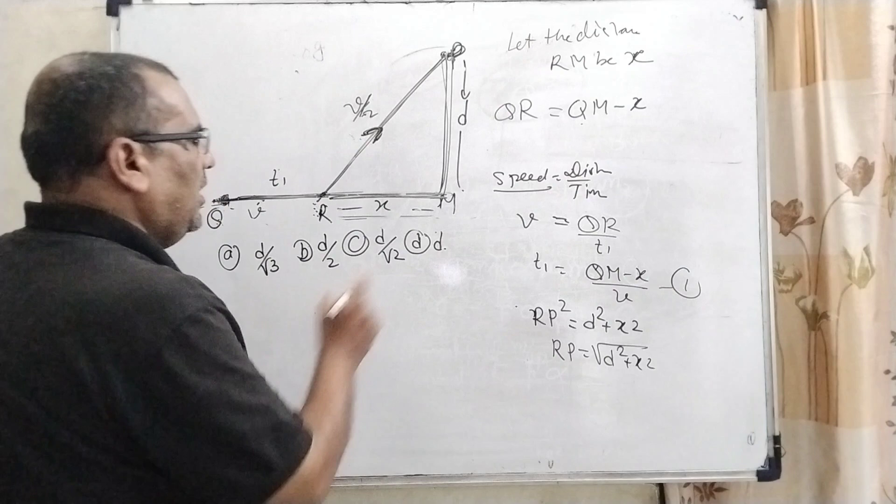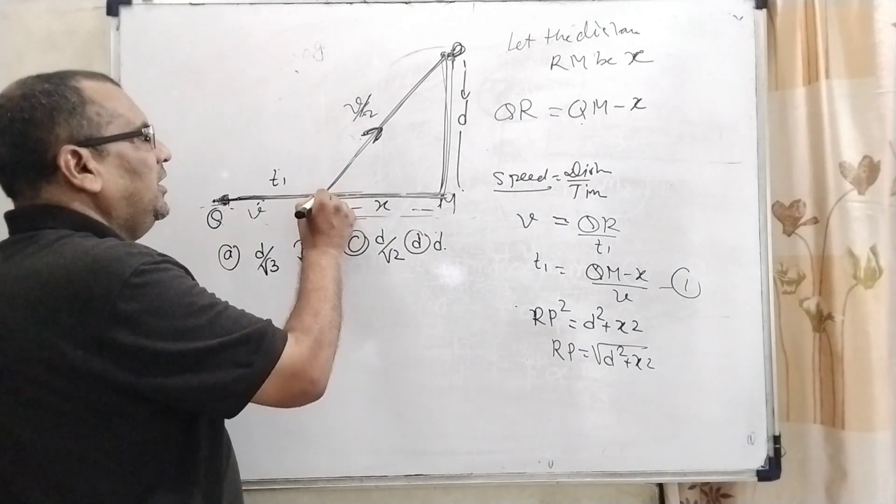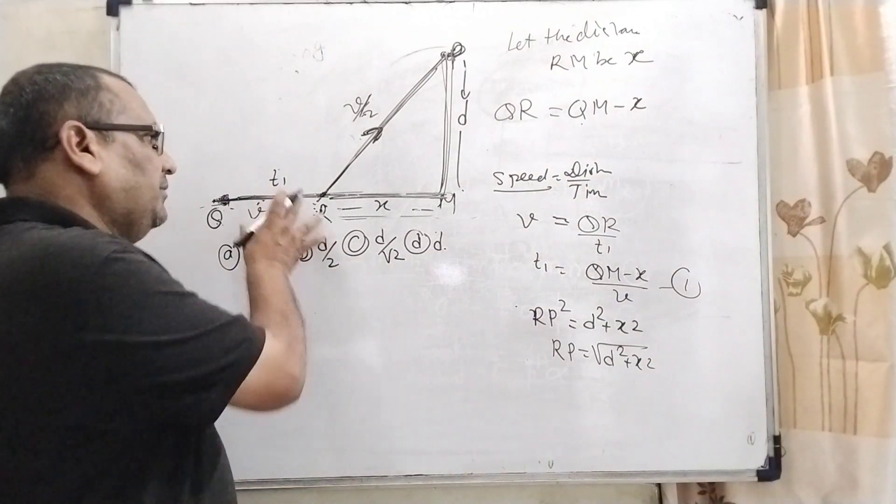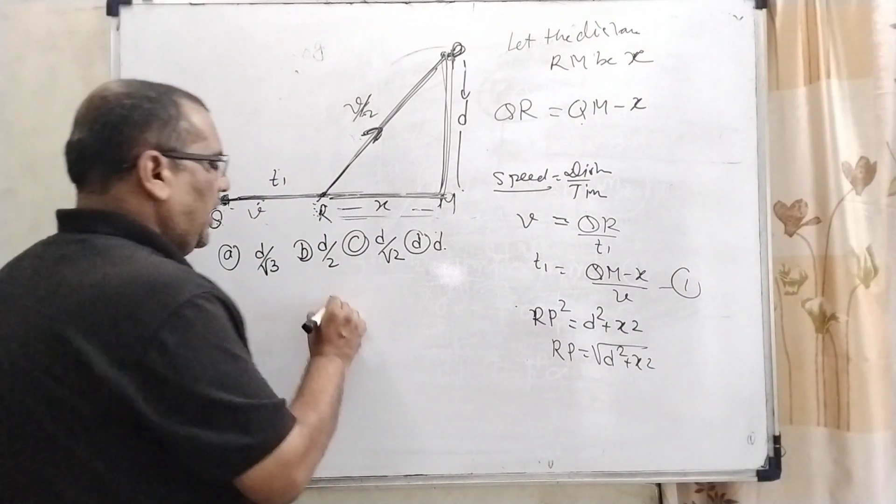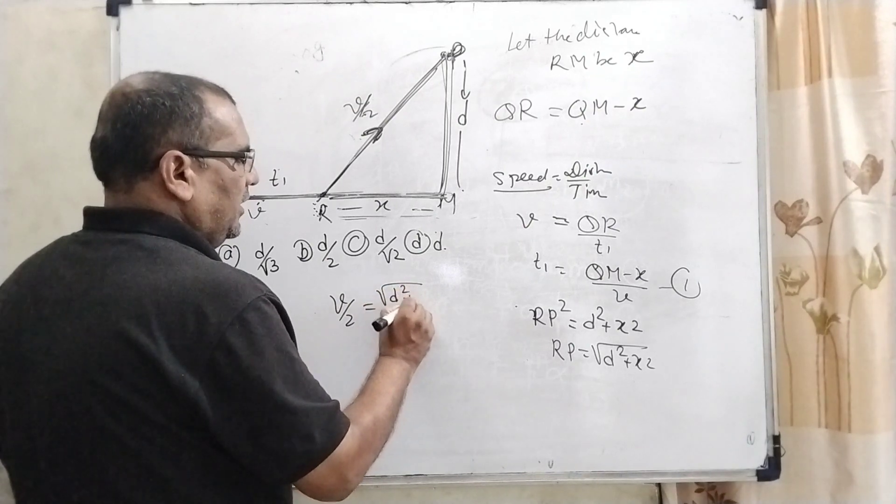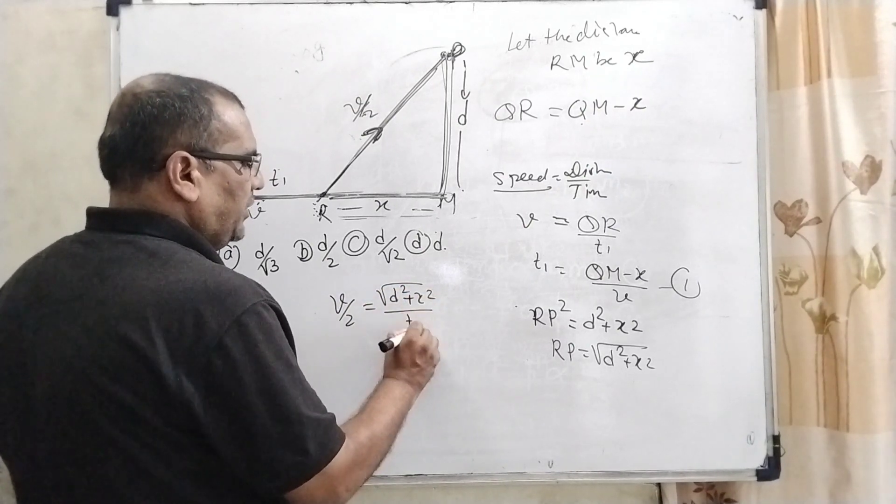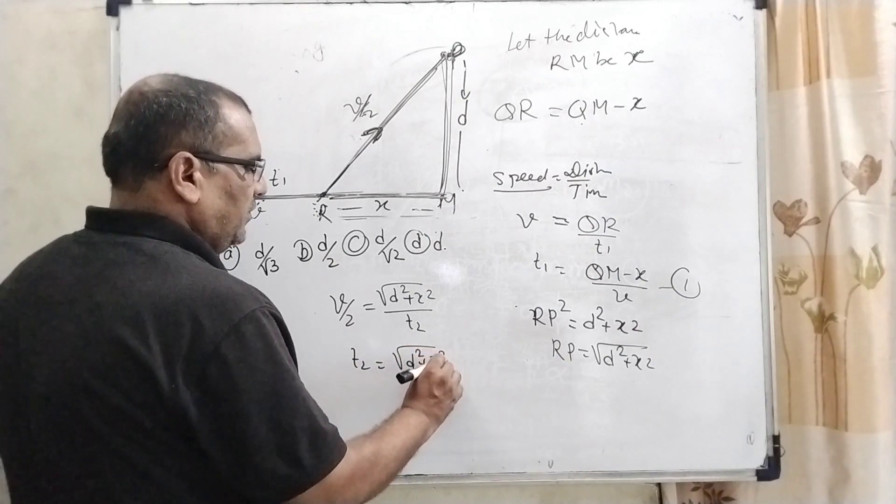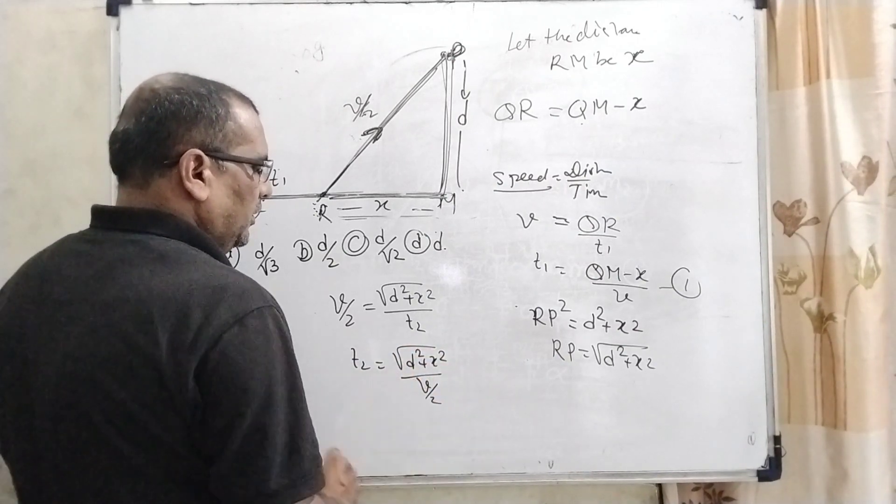Now again, we are using the same formula, but the speed is changed, because here in the field, the velocity is half of the speed. So V by 2 equals root D square plus x square upon T2 time. Then T2 equals root D square plus x square upon V by 2.